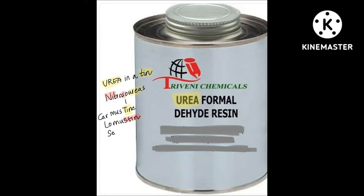The second flashcard: urea is available in tins. Nitrosoureas have 'tin' in their names — carmustine, lomustine, semustine. Remember it like urea in a tin.